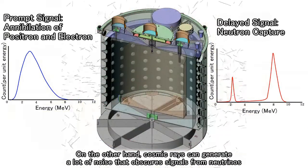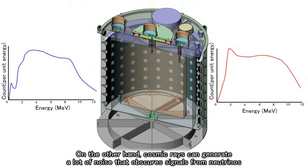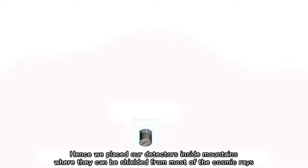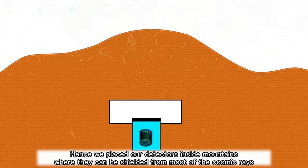On the other hand, cosmic rays can generate a lot of noise that obscures signals from neutrinos. Hence, we place our detectors inside mountains where they can be shielded from most of the cosmic rays.